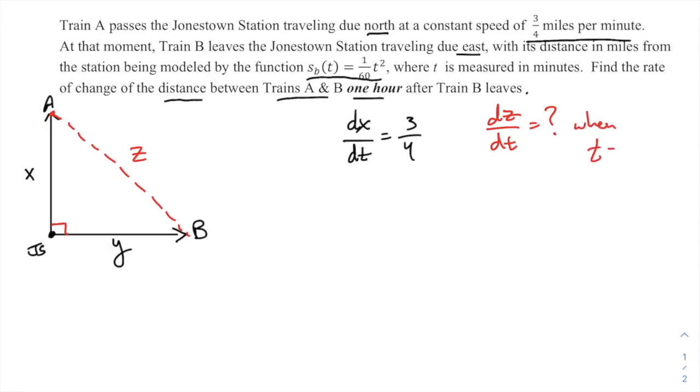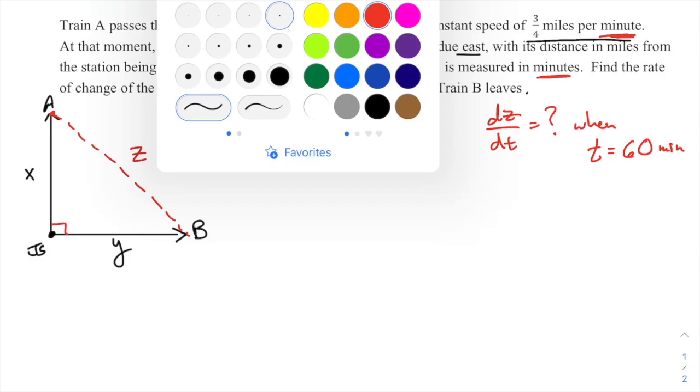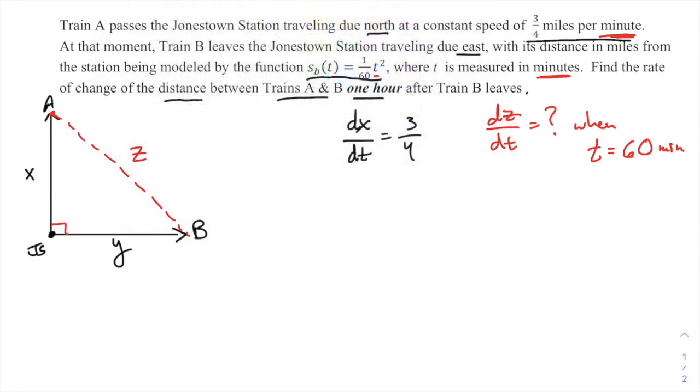So that would be the distance between these two trains—would be the hypotenuse on this right triangle, and it is a right triangle of course. So whatever you want to call that, z, c, whatever. We want dz/dt—this is what we're looking for when t is one hour. Except one hour—if you notice, all these other parts of the problem are measured in minutes, and that's what t is measured in. This is measured in miles per minute, so I'm just going to call that 60 minutes there instead of one hour.